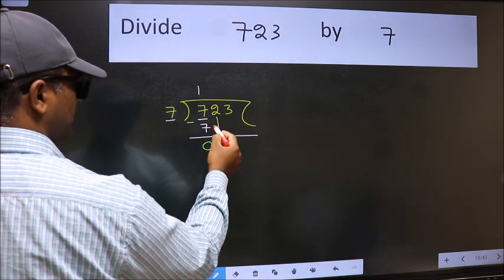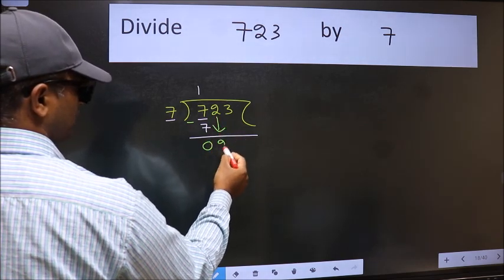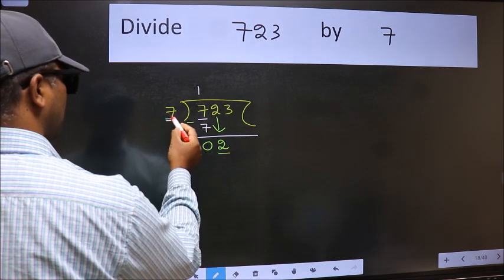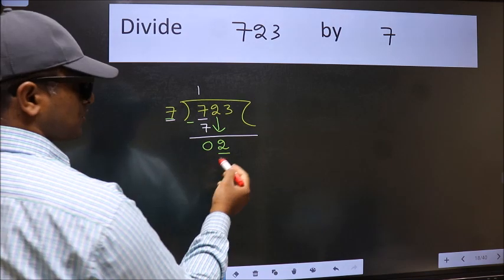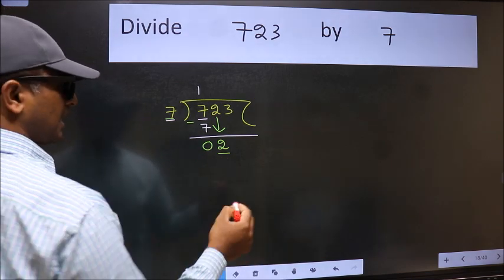After this, bring down the next number. So 2 down. Now here we have 2 and here 7. 2 is smaller than 7. So we should bring down the second number.